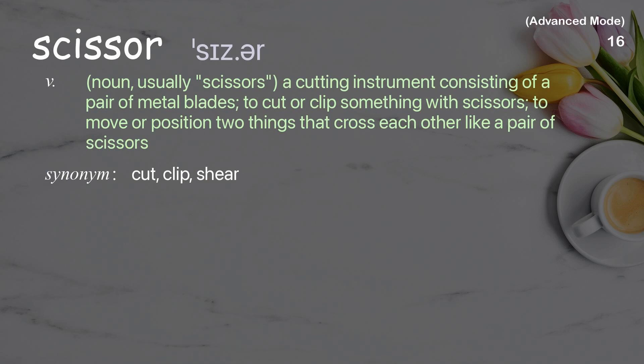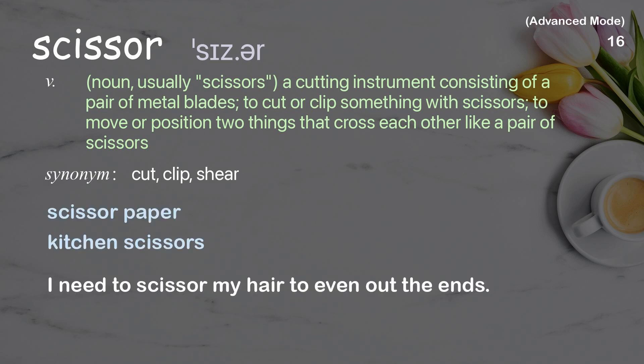Scissor: usually scissors, a cutting instrument consisting of a pair of metal blades; to cut or clip something with scissors; to move or position two things that cross each other like a pair of scissors. Examples: scissor paper, kitchen scissors. I need to scissor my hair to even out the ends.